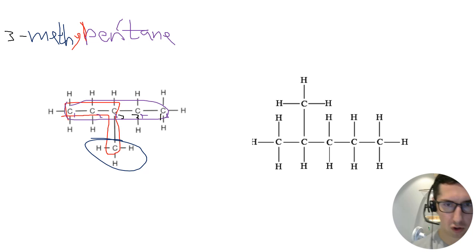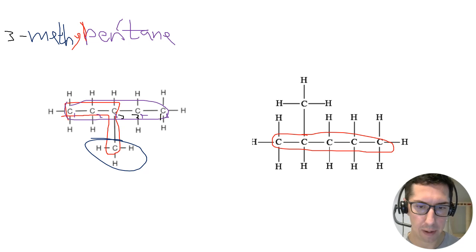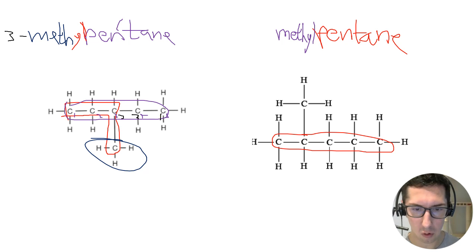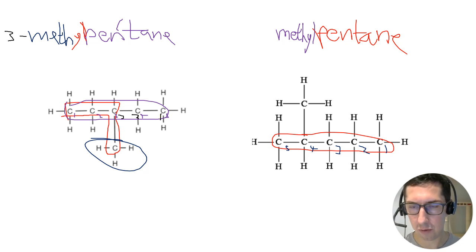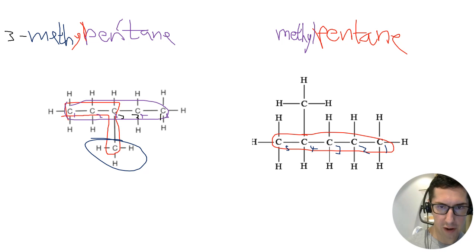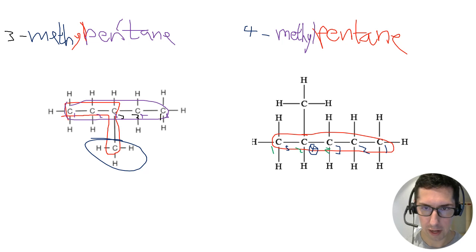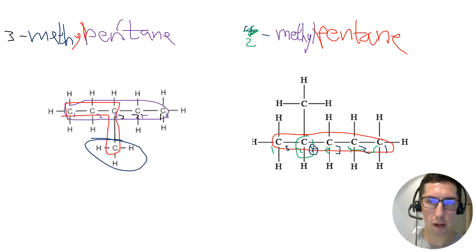Now let's look at a case where numbering is trickier. The longest chain is five carbons: pentane, with one methyl side group. If you number from the wrong end, the methyl lands on carbon four — giving '4-methylpentane', which is incorrect. Always check both directions and choose the numbering that gives the lowest possible number. The correct name is 2-methylpentane; 4-methylpentane does not exist.